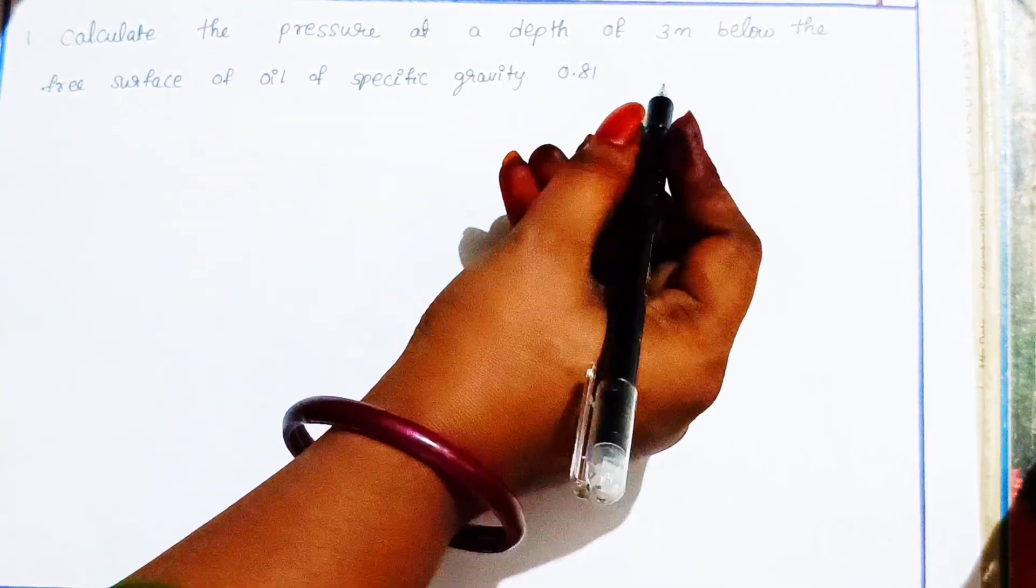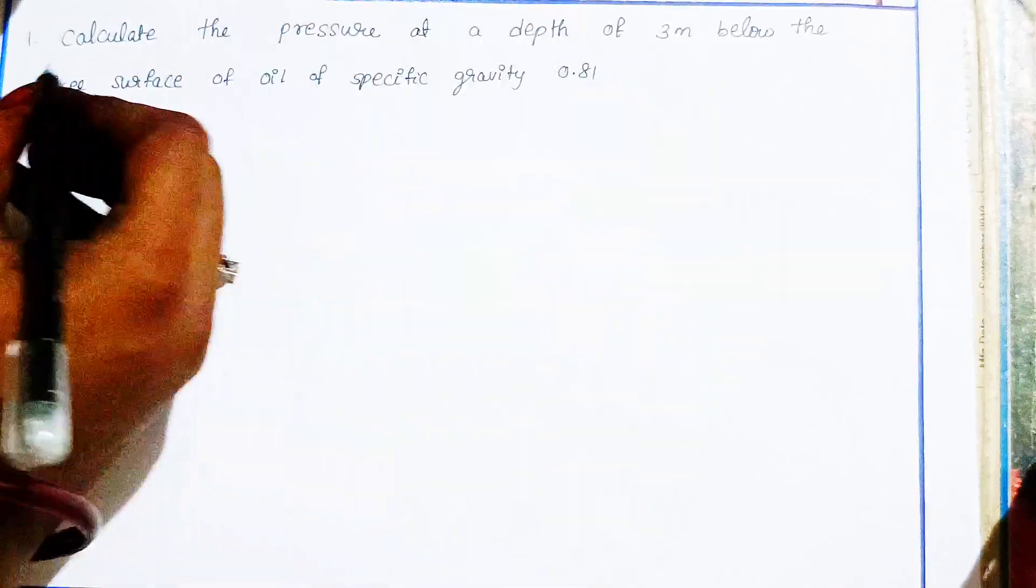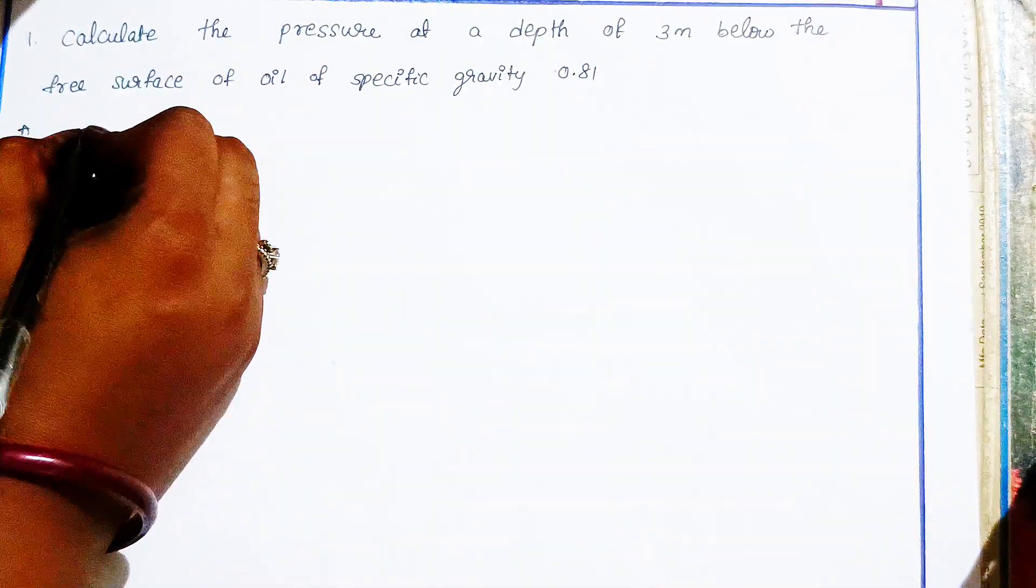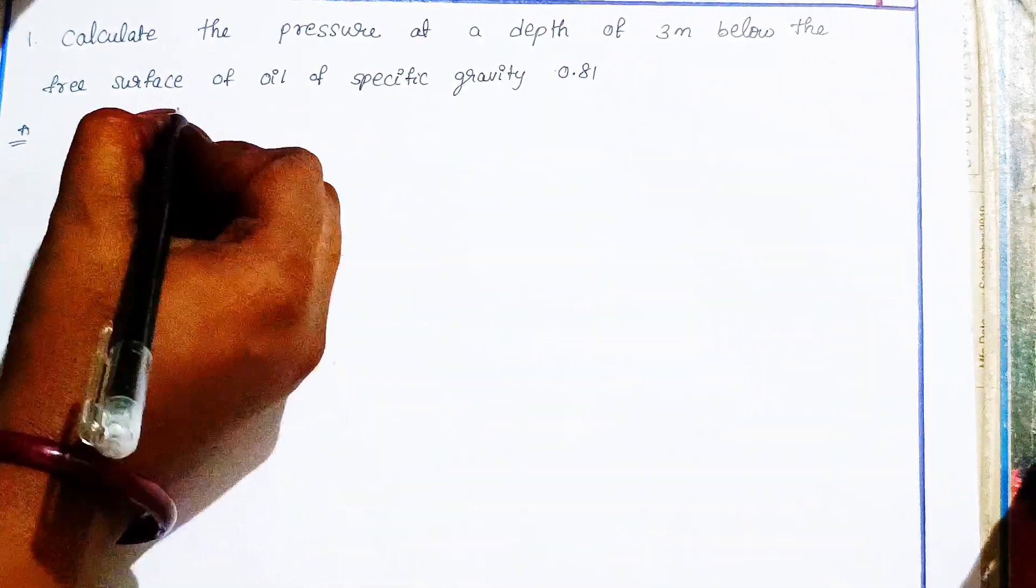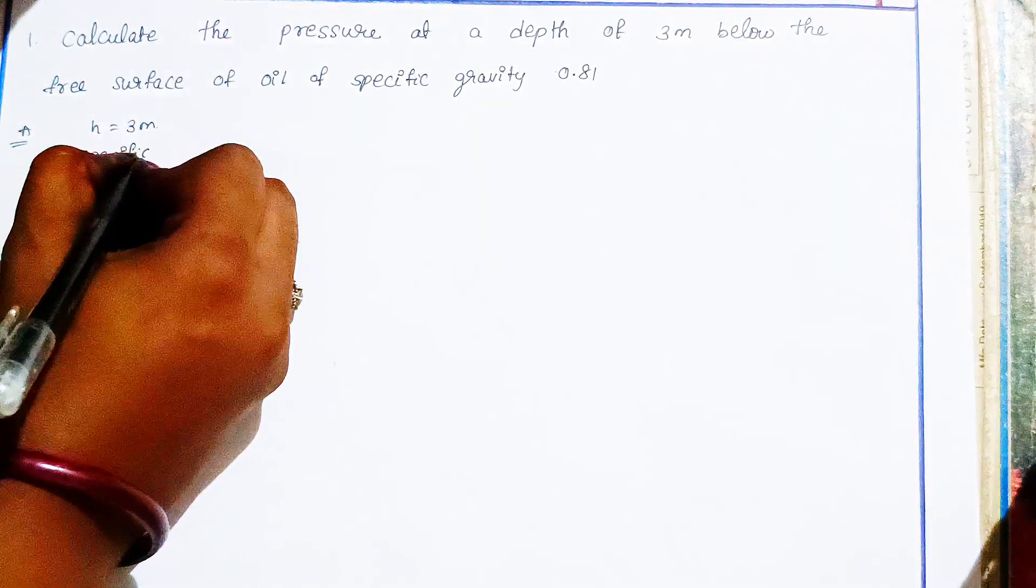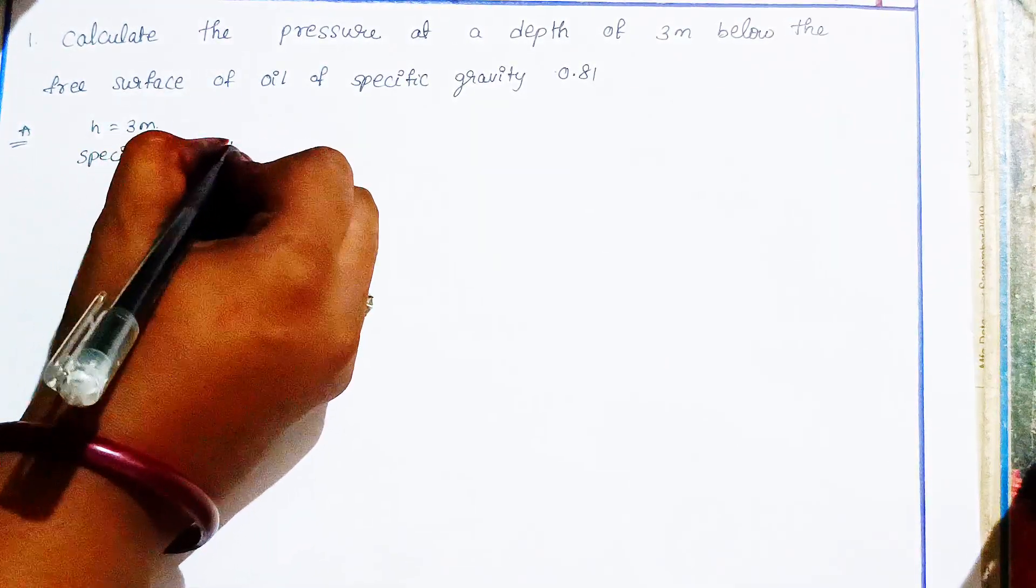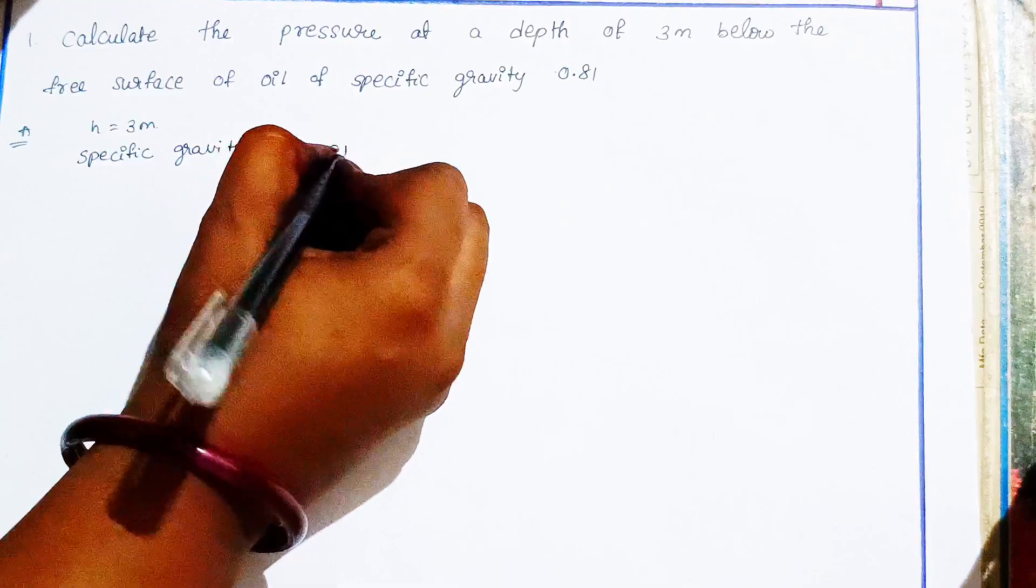Specific gravity and height equal pressure. Height is 3 meters, and specific gravity is 0.81.